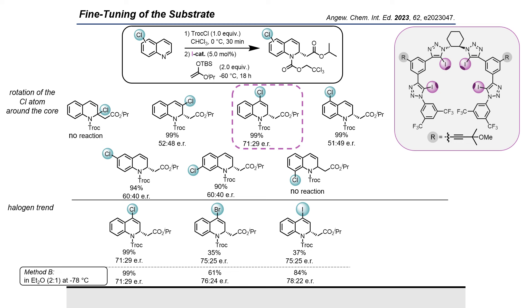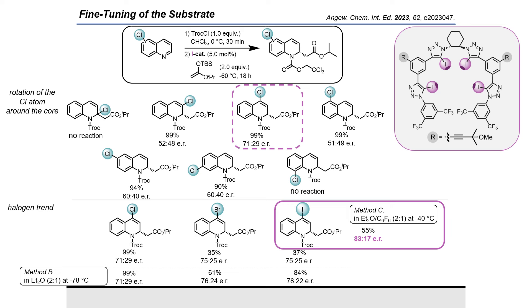In further mixed solvent screening studies, we found out that dialkyl ether and hexafluorobenzene in a ratio of 2 to 1 was working the best for our system, with an enantiomeric ratio of 83 to 17.